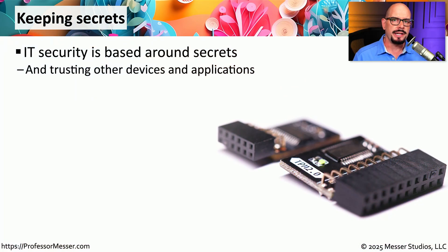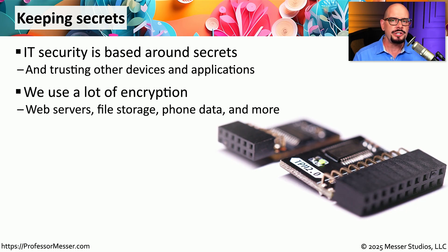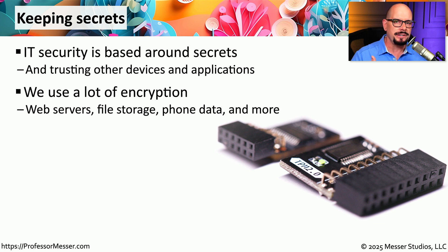A lot of what we do in technology has to do with secrets. We have information that we want to keep secret from other people, and in some cases we want to be sure that the information we're storing on our own system is only available to us. To provide this security, we need to use encryption. Your mobile phone uses encryption to store and transmit information, when we send information to a web server that communication is encrypted, and data on our local hard drive or SSD can also be encrypted.